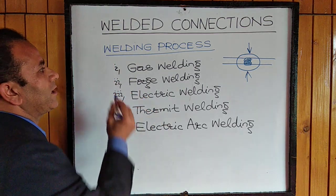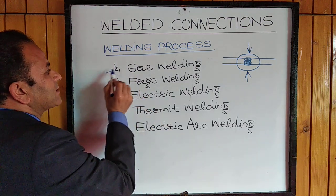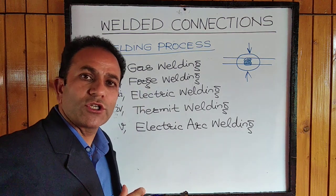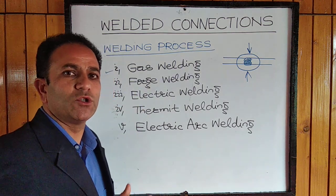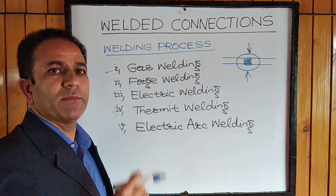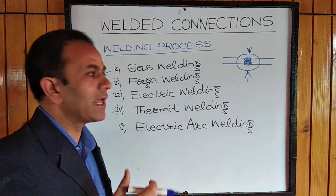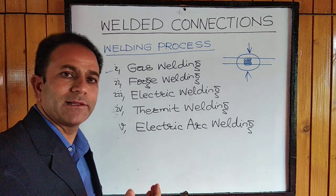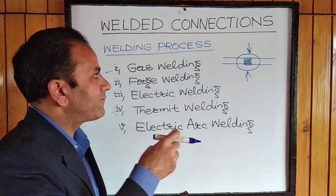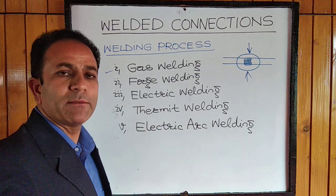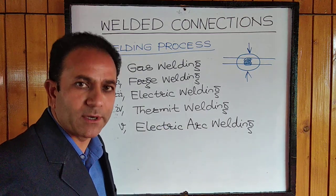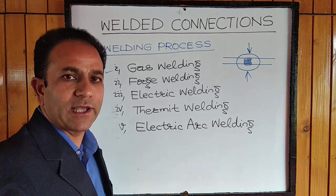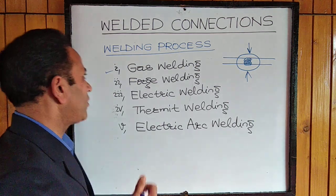There are various welding processes. One is gas welding, in which an oxy-acetylene gas flame is used to heat the ends of the members. A filler metal is used which melts and fills up the gap between the two plates or members, which solidifies on cooling and hence a joint is formed.